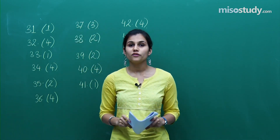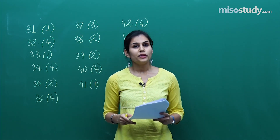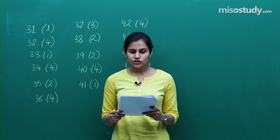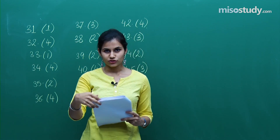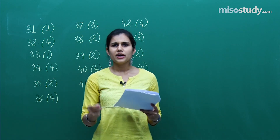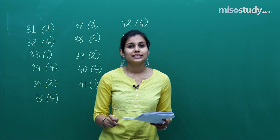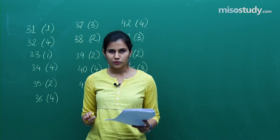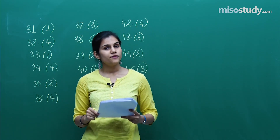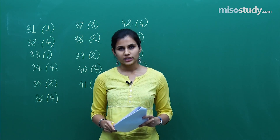We are solving test booklet code C. Question 46 is from the probability section, asking a basic classic probability question — this pattern is repeatedly asked in the mains every year. The correct probability is 2/5, which is option number 1 for question 46.